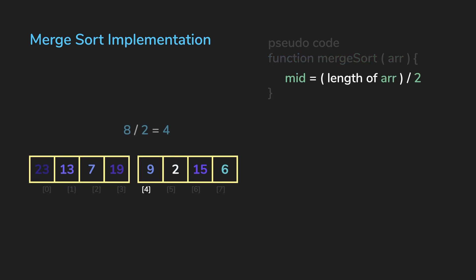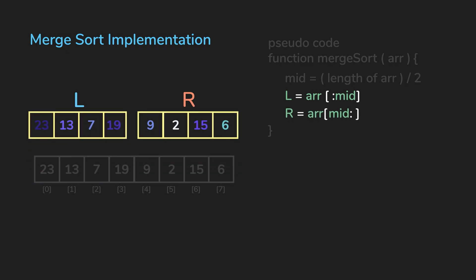To divide the array, what we'll do is find the middle index, which is the length of the array divided by two, and then we'll copy the elements into the two new arrays, one named L and one named R.